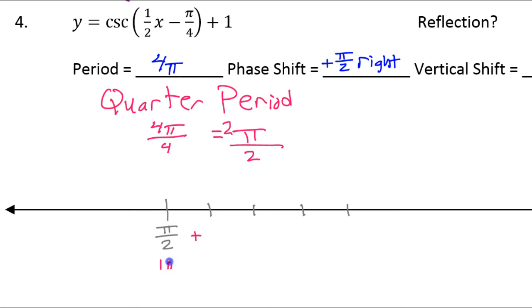So this is kind of like 1 pi over 2. If I add 2 pi over 2, that'll be 3 pi over 2. And if I add another 2 pi over 2, that would be 5 pi over 2. And if I added another 2, that would be 7 pi over 2, and then 9 pi over 2.